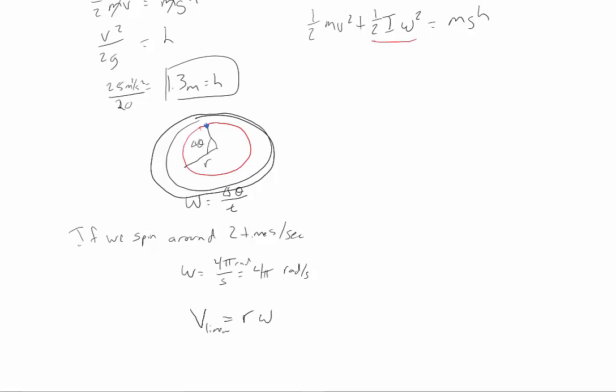So if we take r times omega, that gives us our velocity, our linear velocity, or the other way to think about that is that if we want to find omega and we know the linear velocity, we just take v divided by r.